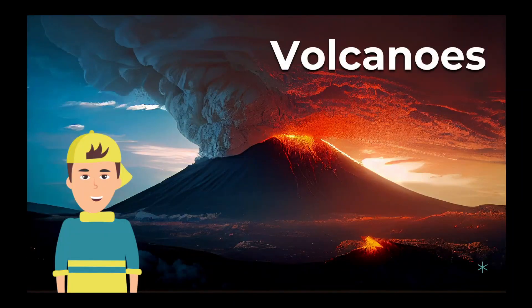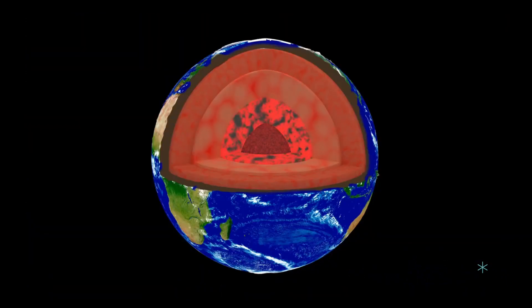When a volcano erupts, it's like a giant science experiment happening right in front of our eyes. Inside the earth, there are different types of rocks and molten lava that are constantly moving and changing.